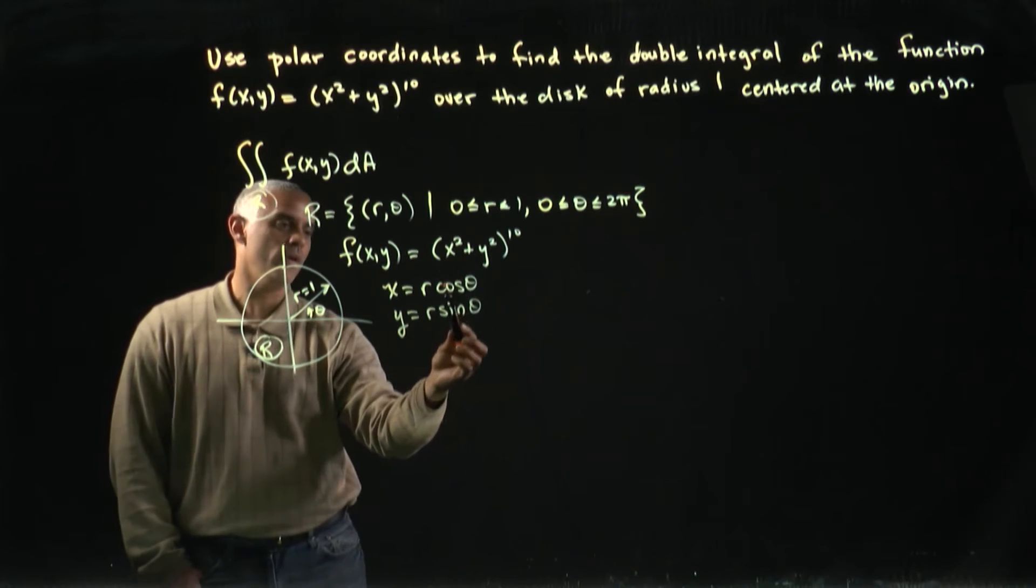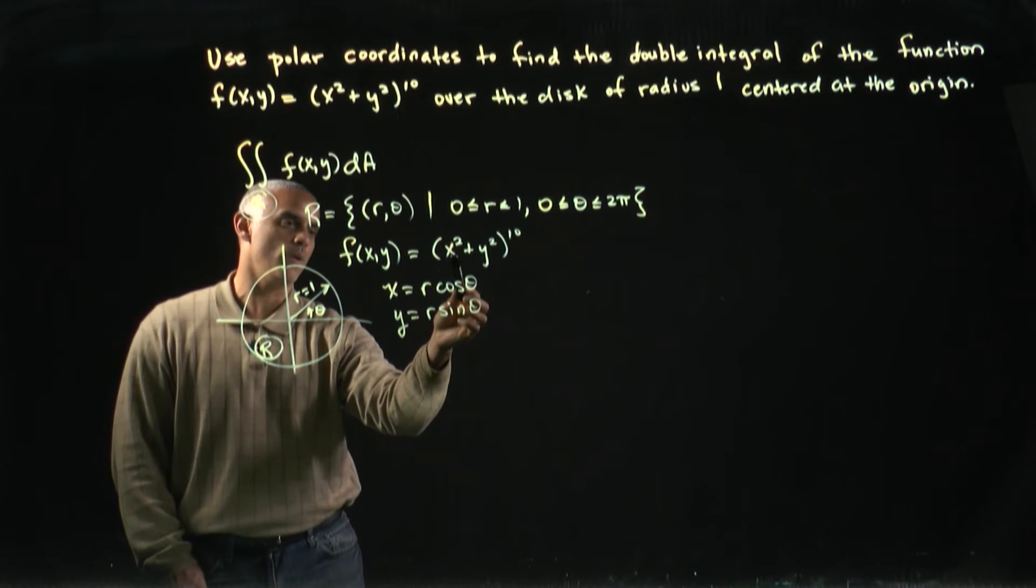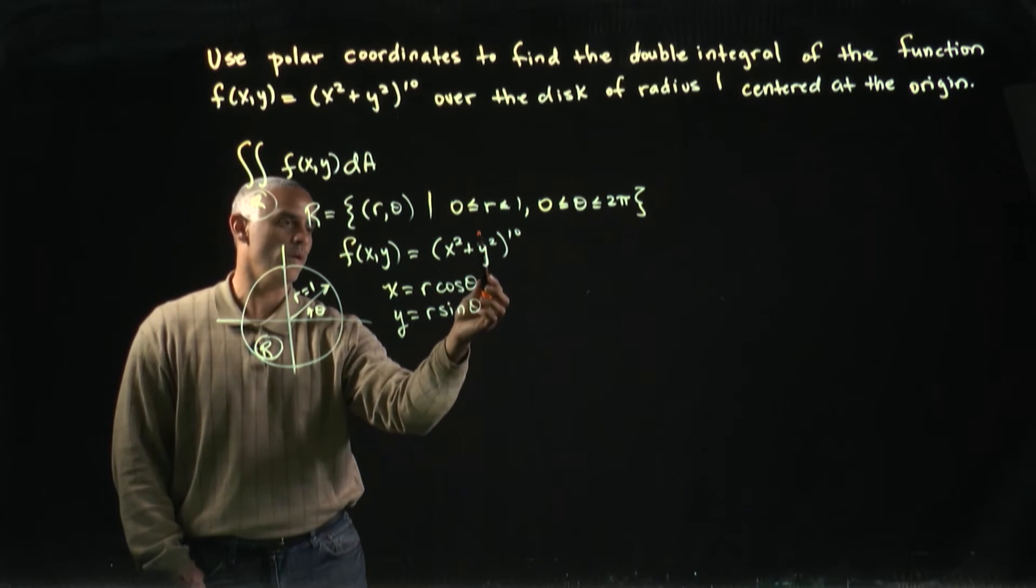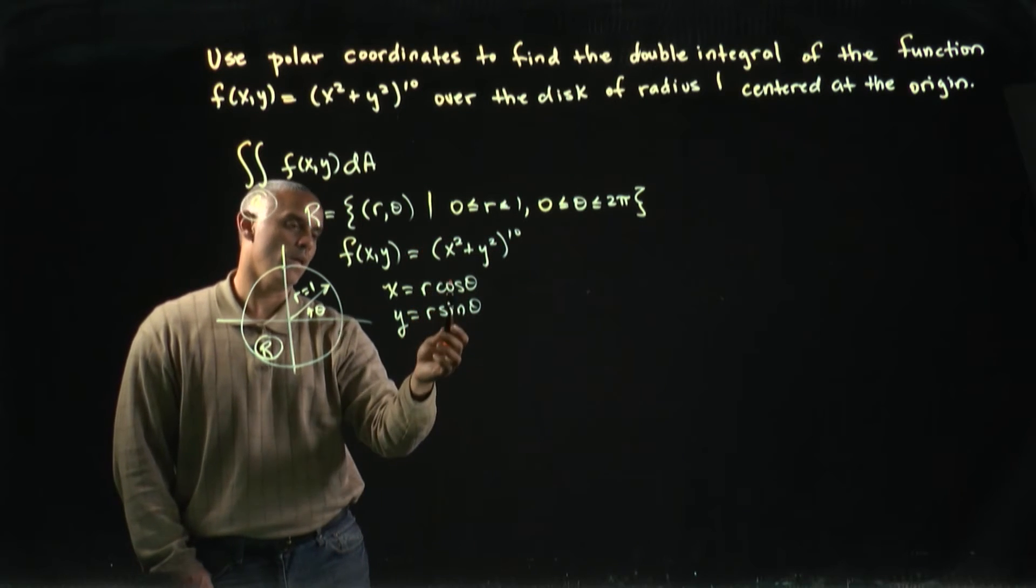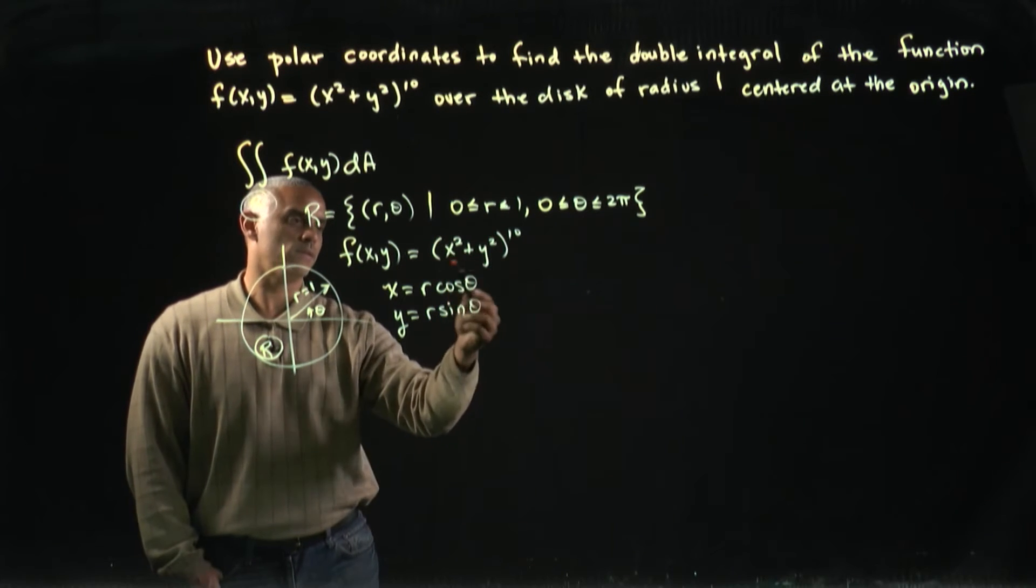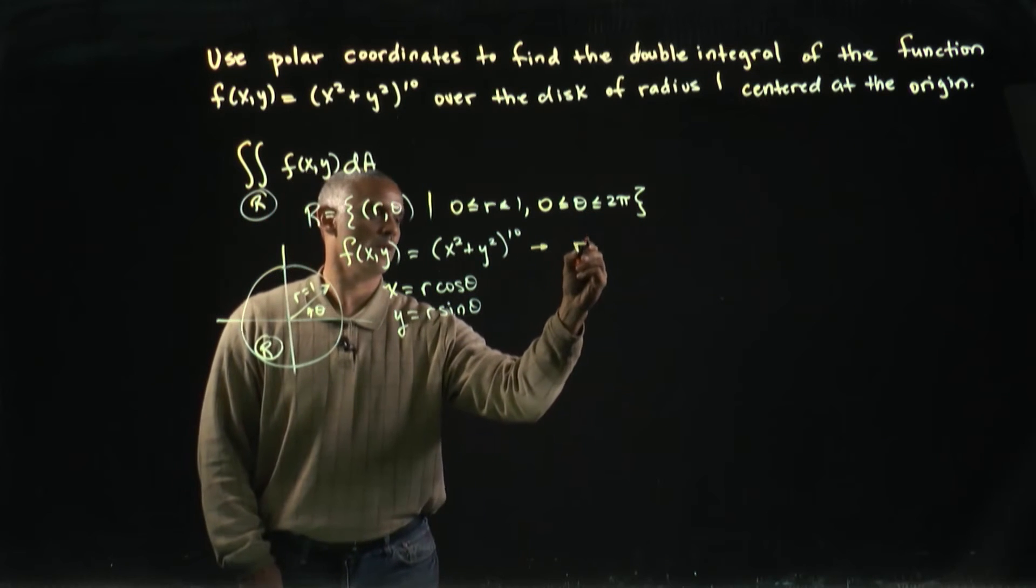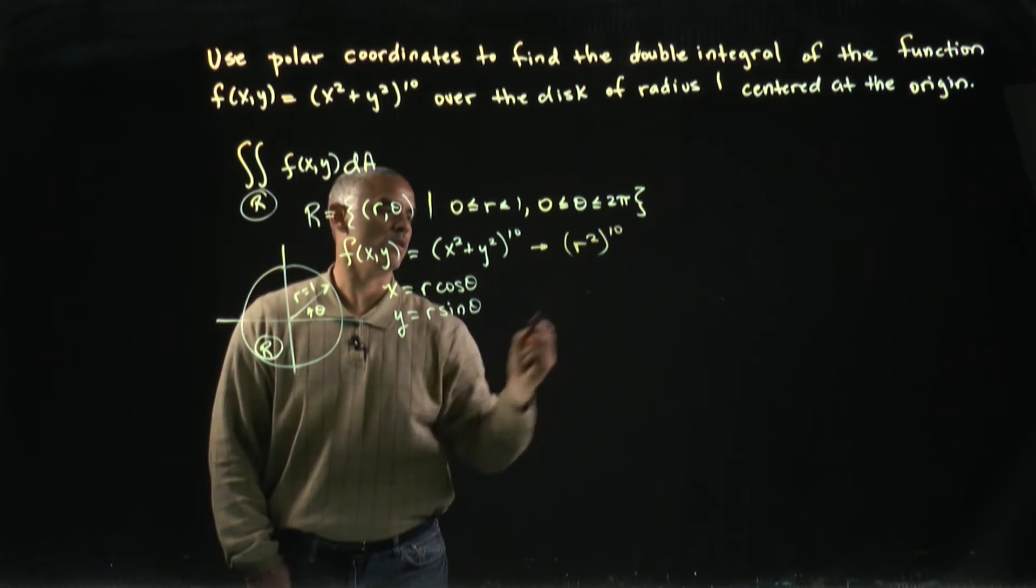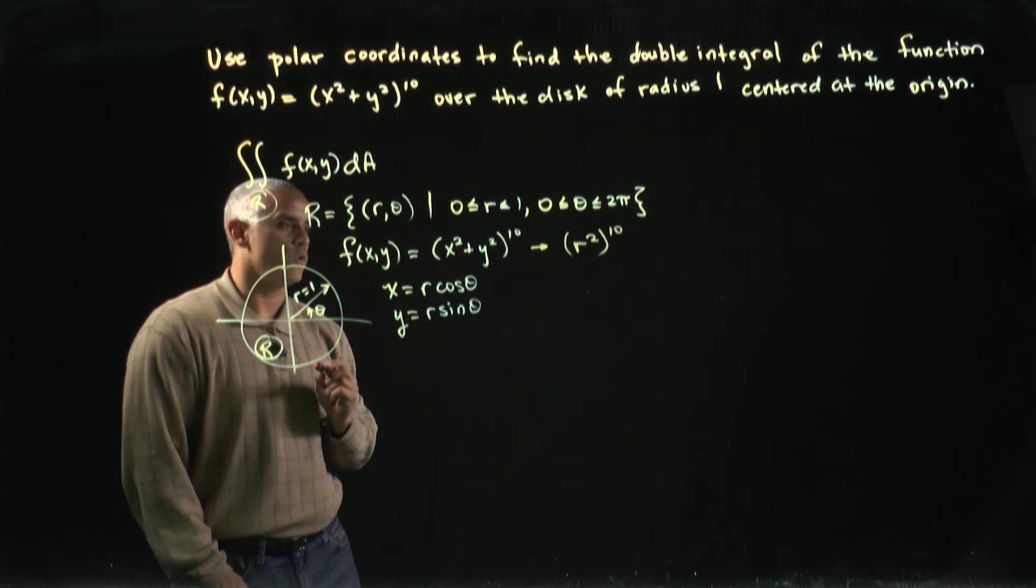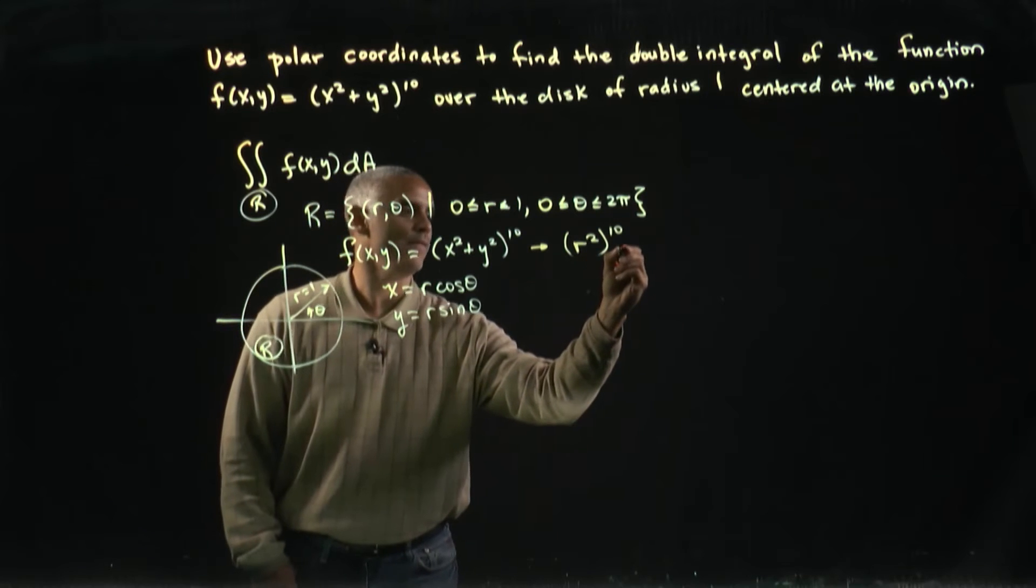If I plug in r cos θ and r sin θ, I get r² cos² θ + r² sin² θ. I can factor out r², and I'm left with cos² θ + sin² θ, which is just one. So this becomes (r²)^10. And when I raise a power to a power, I simply multiply the exponents.